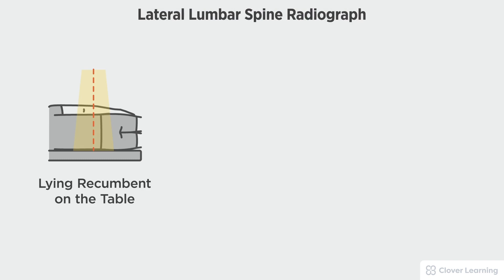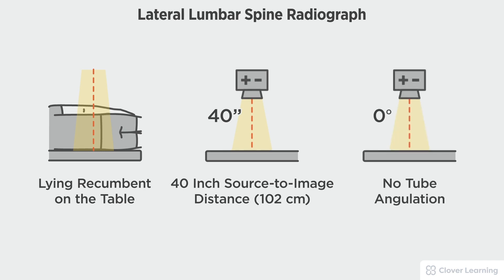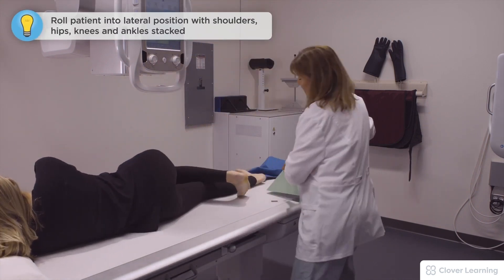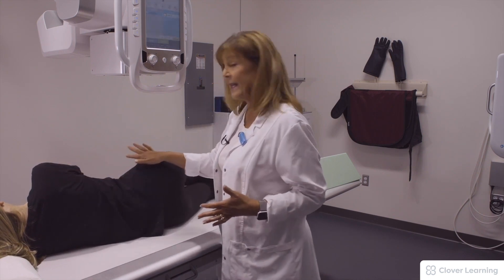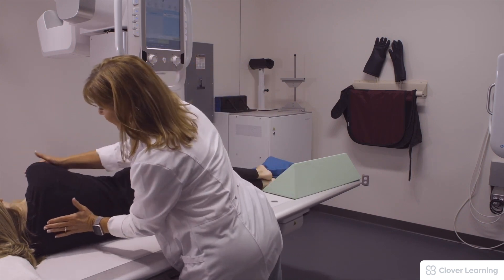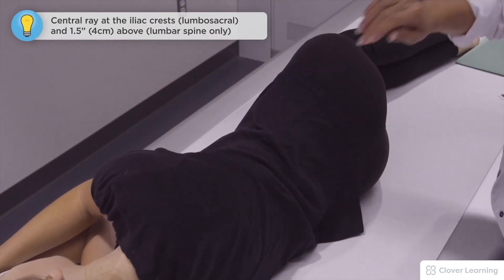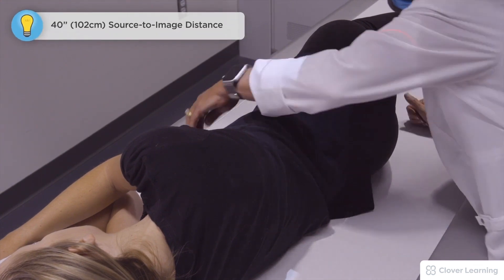In this view we will be demonstrating the lateral lumbar spine. The lateral lumbar spine should be performed with the patient lying on the table with a 40 inch source to image distance and no tube angulation. We want to make sure our patient is in true lateral position — shoulders stacked, hips, knees, and ankles aligned. We push her forward to ensure her back is straight. Our central ray is at the crest or an inch and a half above, using the coronal plane. She's on her left side so I'll use the left marker anteriorly and have her exhale.